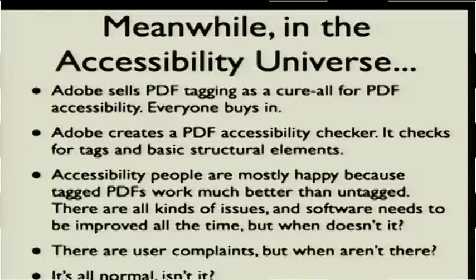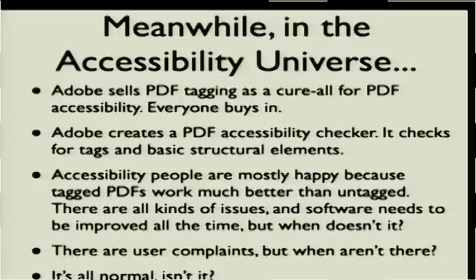What about accessibility? We all heard many times that PDF is an accessible format — just ask Adobe. At some point they implemented tagged PDFs as this greatest accessibility PDF feature ever. They created an accessibility checker that checks for tags, and everybody loves tagged PDFs. The documents describing how to create an accessible PDF are up to 15 or 20 pages, and there are people complaining all the time, and they're always told the mistake is that they checked some option wrong or clicked the wrong button somewhere, and that's why they ended up with a PDF that is not as accessible as they would have liked. But generally everybody is happy, there are always user mistakes, there are always bugs, and that's all normal.